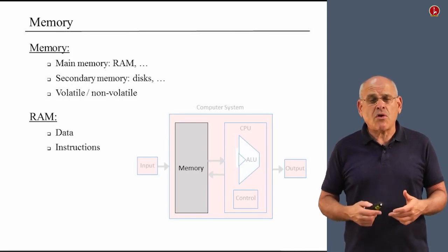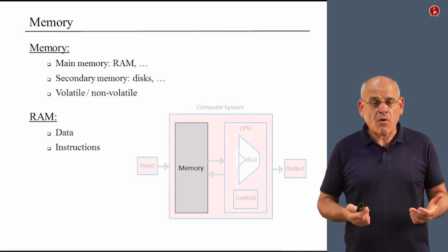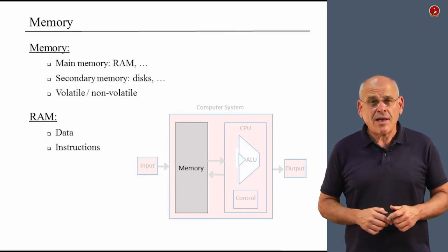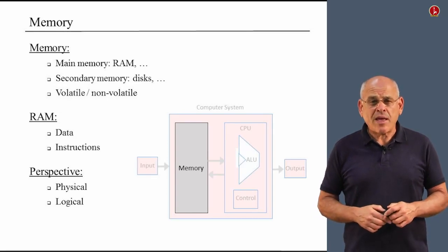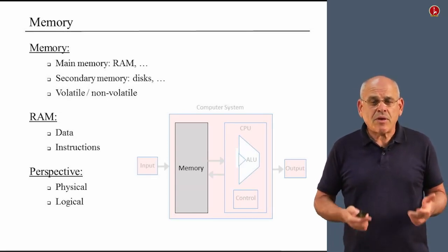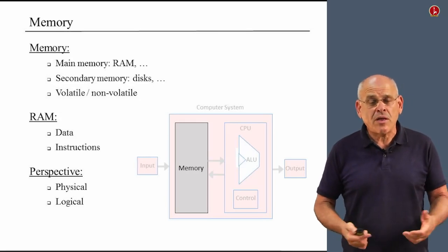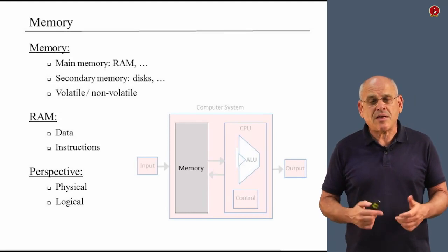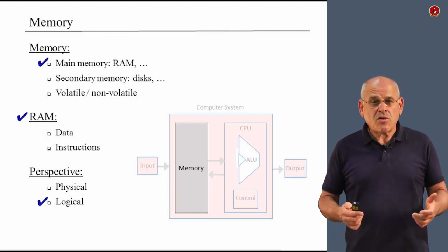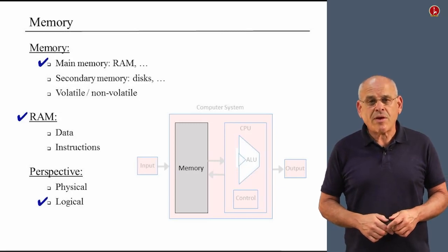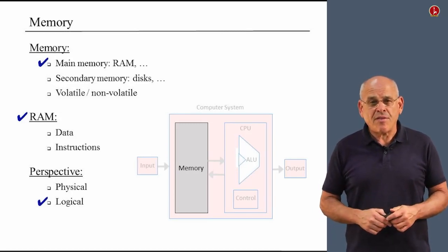The RAM is used to store both the data on which our programs operate, as well as the instructions which are the building blocks of the programs themselves. We will talk about this duality later when we discuss the overall computer architecture. In this unit and course, we always focus on logical considerations, and in particular on the RAM unit, which is the most important element of the computer's main memory.